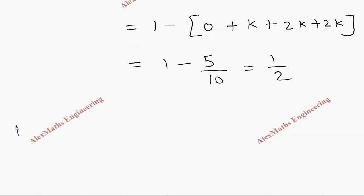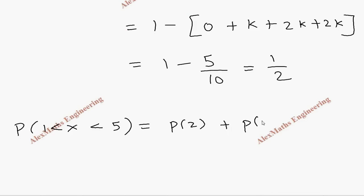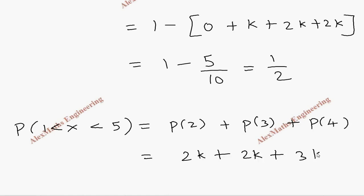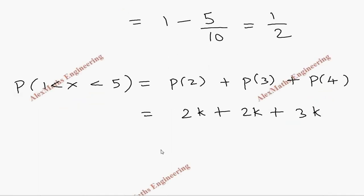For the last part, P(1 < X < 5) covers values 2, 3, and 4. So P(2) + P(3) + P(4) = 2k + 2k + 3k = 7k. Substituting k = 1/10 gives 7/10.